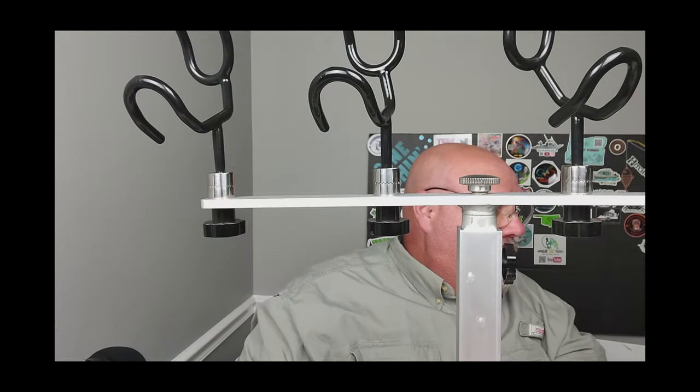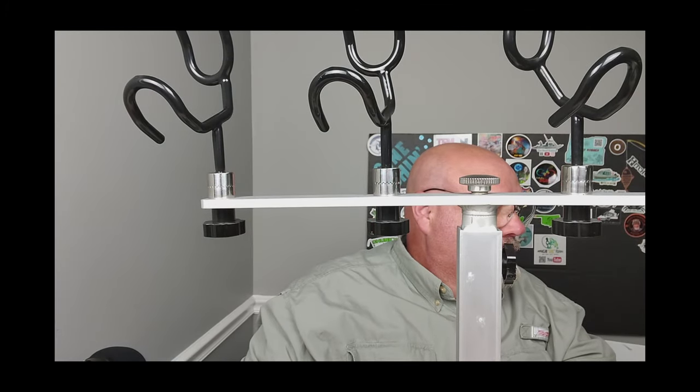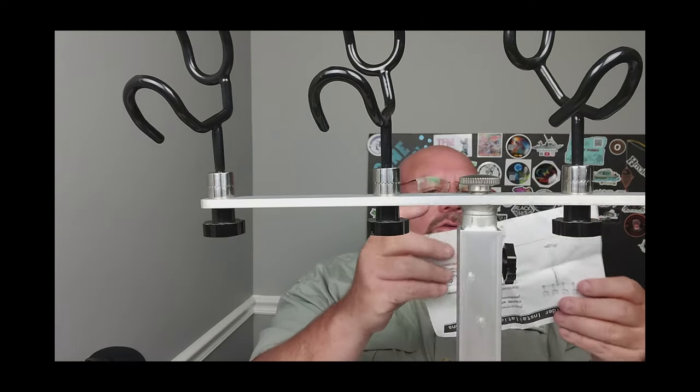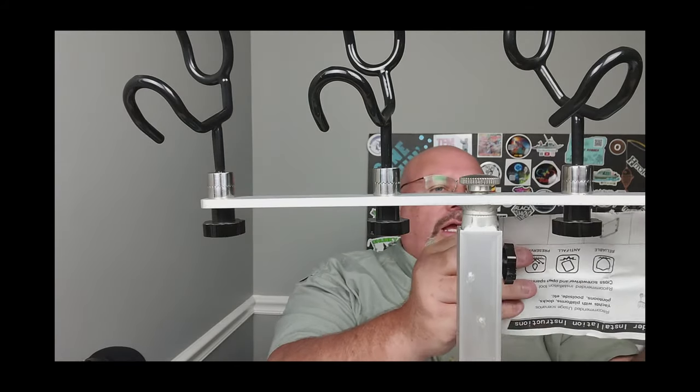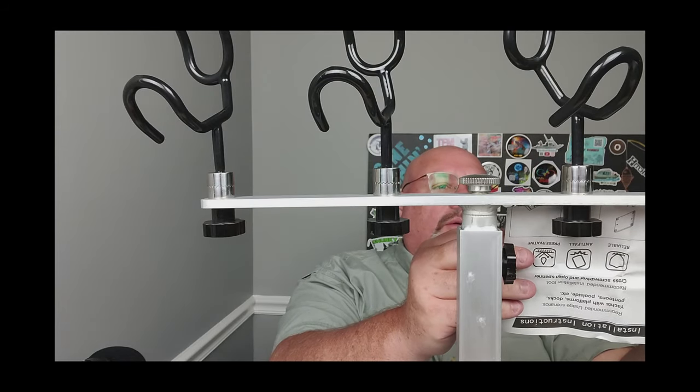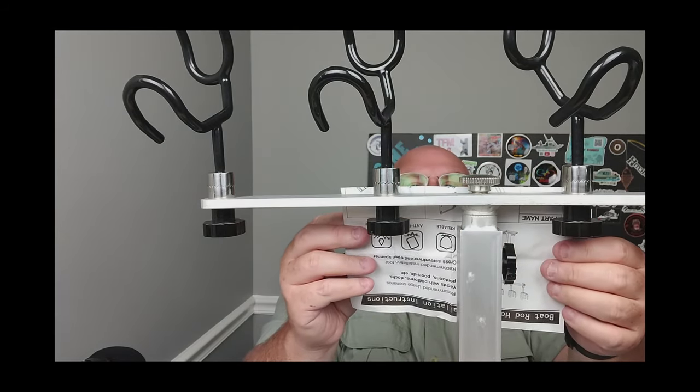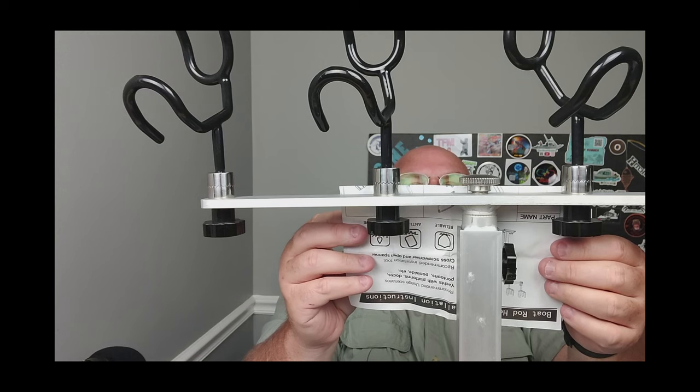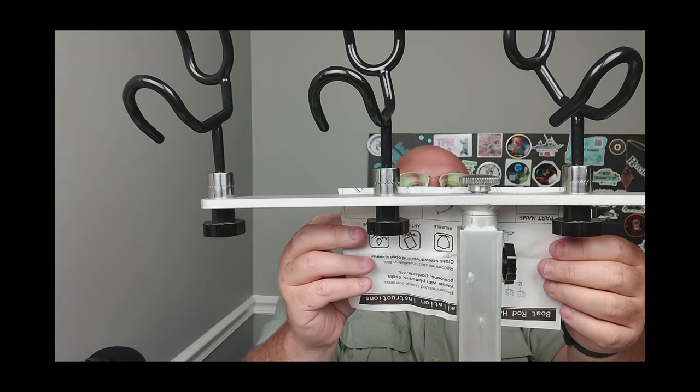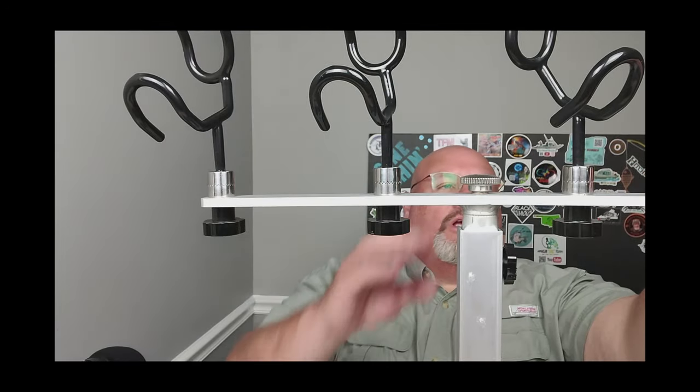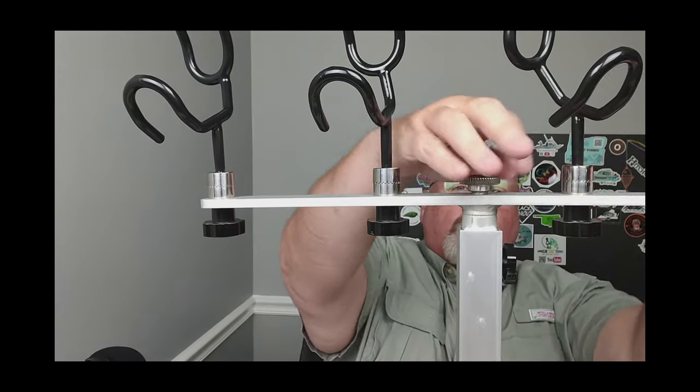Should have come here with a ruler, I did not. But this is an eight-and-a-half by eleven sheet of paper, so this would be eight and a half inches. So we're pretty much about six inches apart, maybe seven, on the center from each rod holder to the next.